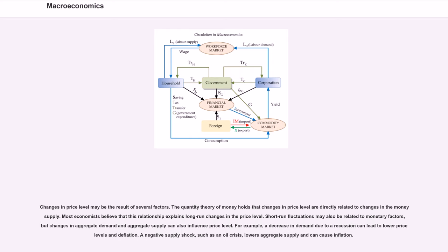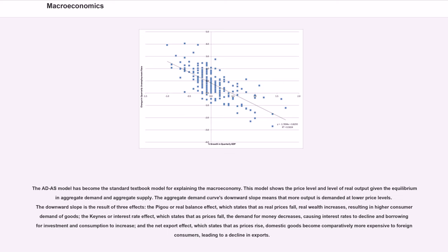A negative supply shock, such as an oil crisis, lowers aggregate supply and can cause inflation. The AD-AS model has become the standard textbook model for explaining the macroeconomy. This model shows the price level and level of real output given the equilibrium in aggregate demand and aggregate supply.